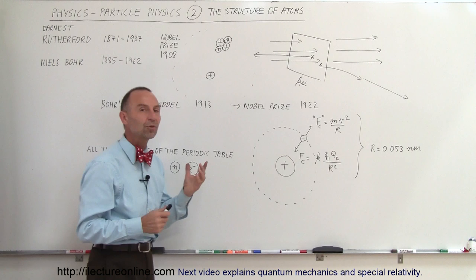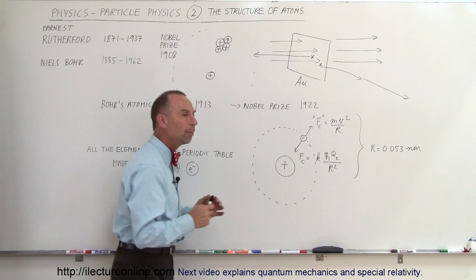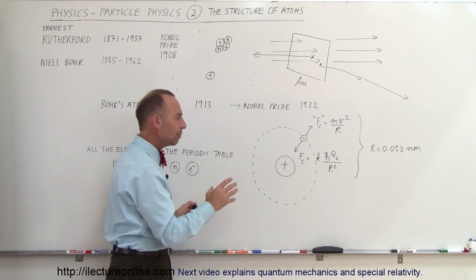So he surmised then, that the nucleus, and based upon what others had discovered, had to be made up of positive charge, but the mass of the nucleus, which was the overwhelming mass of the overall atom, had to be made of not just positive particles but also neutral particles. So the concept came in, that an atom was made up of positive particles called protons, neutral particles called neutrons, and electrons.